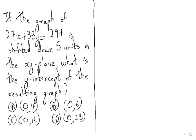Hello everyone, my name is Naushad and today we are going to solve this question. If the graph of 27x plus 33y equals 297 is shifted down 5 units in the xy plane, what is the y-intercept of the resulting graph?